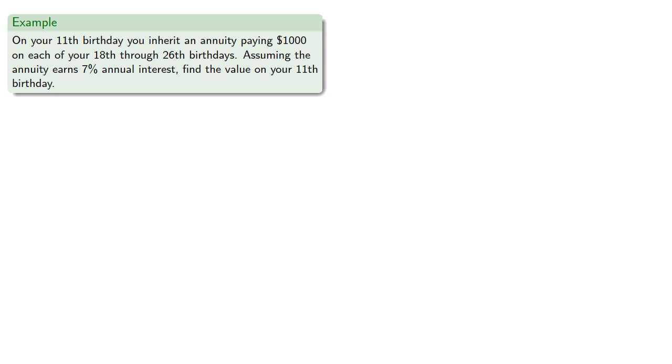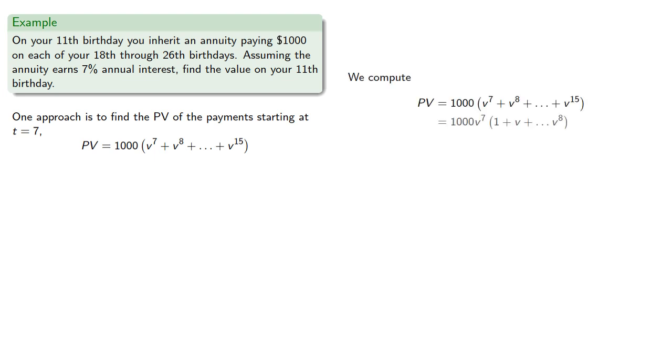So one approach is to find the present value of the payment starting at t equals 7. So our present value will be, and we can compute, if we remove a factor of v to the 7th we get, and we can apply our geometric series summation formula.